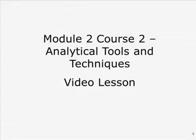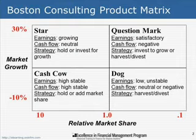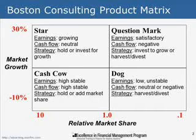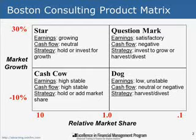This video lesson highlights a few of the topics covered in Module 2, Course 2, Analytical Tools and Techniques. One of the techniques we talked about in the course regarding managing a portfolio of different products was to use the Boston Consulting Product Matrix, which uses four quadrants. Once you place your different products into one of these four quadrants, it basically directs you as to the strategy on how you should manage those products.